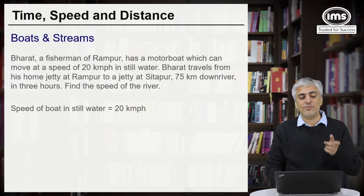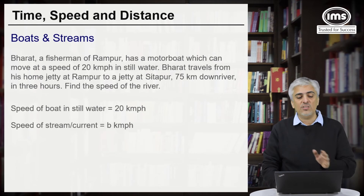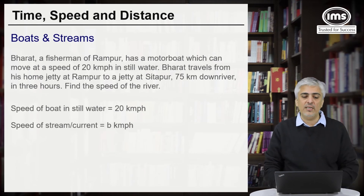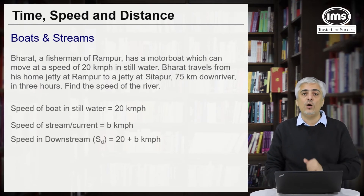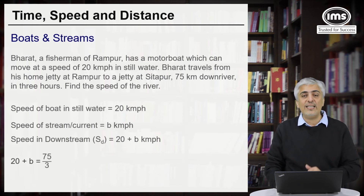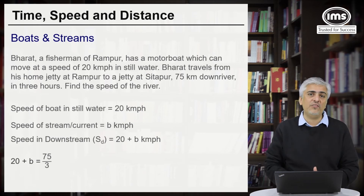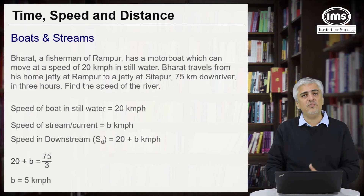Looking at the concepts: speed of the boat A is given as 20, and speed of the stream is B. Speed in downstream will be 20 plus B. Time taken is three hours and distance is 75 km. So 20 plus B equals 75 divided by 3, which is 25. Therefore 20 plus B equals 25, so B equals 5 km per hour. Straightforward question.